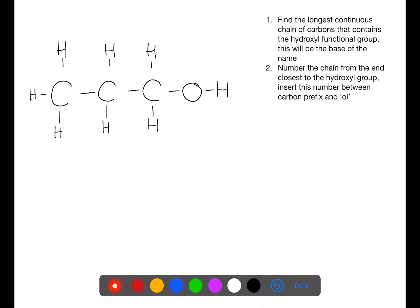Let's look at this example. The longest chain has three carbons with the hydroxyl group attached. This means the start of the name would be based on propane. If we number the chain from the carbon with the hydroxyl functional group, we have one at the right hand side. The hydroxyl group is on the number one and the suffix that we use is 'ol'. This means that this molecule is propan-1-ol.